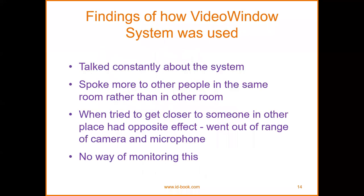Findings on how the video window system was used: people talked constantly about the system; they spoke more to other people in the same room rather than to those in the other room. When someone tried to get closer to a person in another place, it had the opposite effect — they went out of range of the camera and microphone, with no way of monitoring this, because it was a pathway communication through a cabling system.